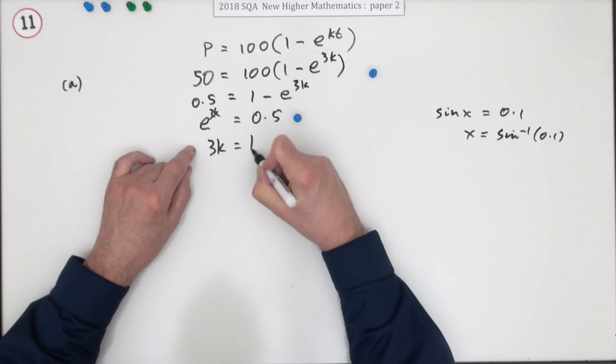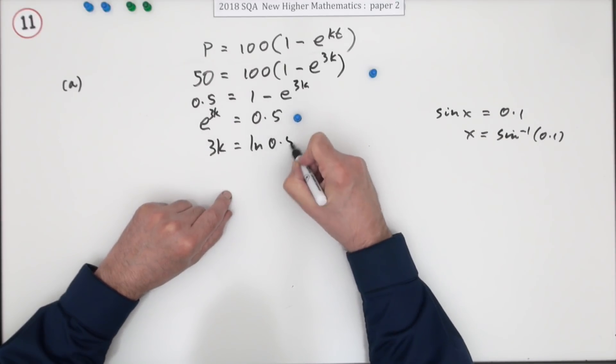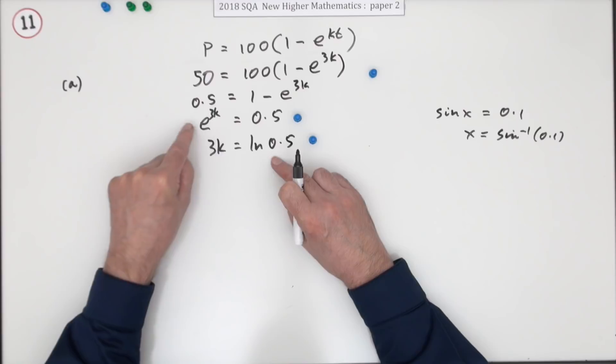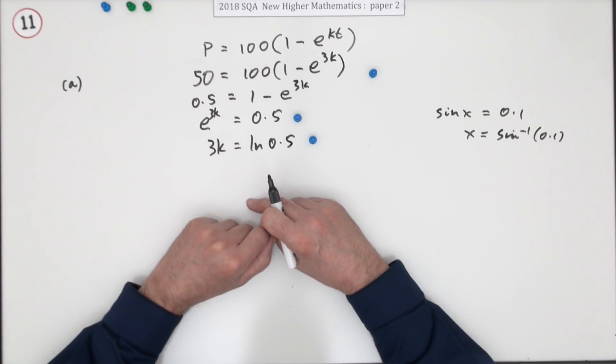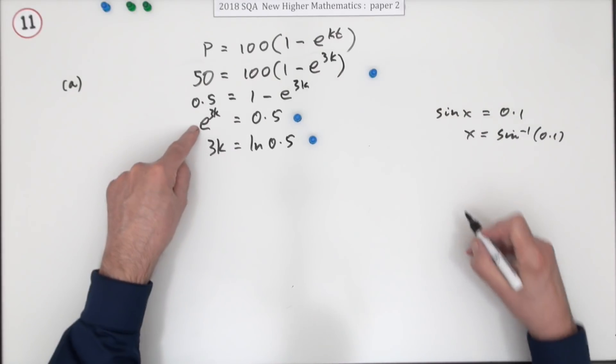So 3k will be log base e, that's that ln, natural logarithm of 0.5. That's worth a mark. Now there is an alternative way of getting rid of that, and that is to apply the logarithms to both sides, and you can do what you like to both sides.